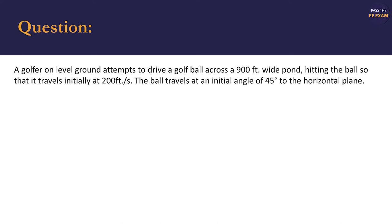This week's problem was created and solved by Enrique Ivers, an engineer in training. In this example, we'll determine the distance of an object struck at a 45-degree angle. Problems like this one are common on the FE. The problem statement reads: A golfer on level ground attempts to drive a golf ball across a 900-foot pond, hitting the ball so that it travels initially at 200 feet per second. The ball travels at an initial angle of 45 degrees to the horizontal plane. We're then asked, how far will the golf ball travel and does it clear the pond?